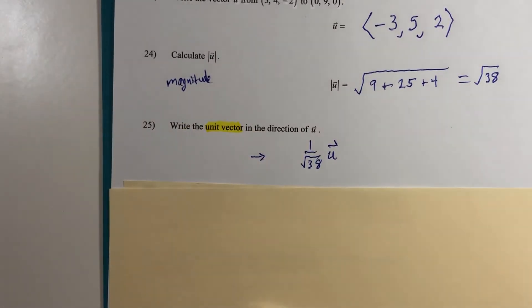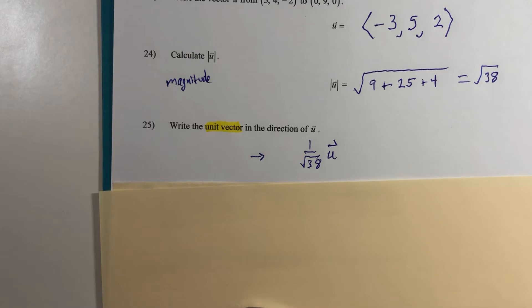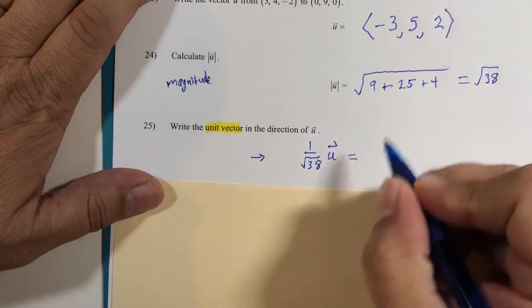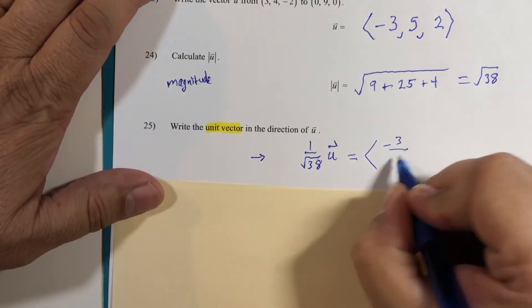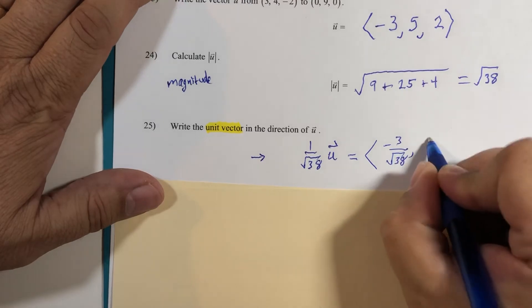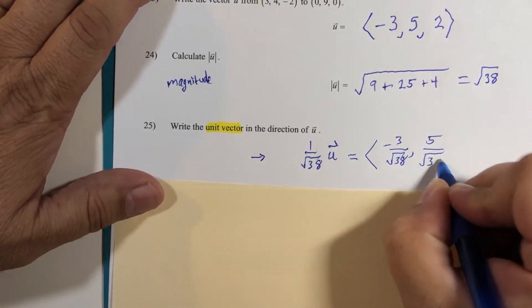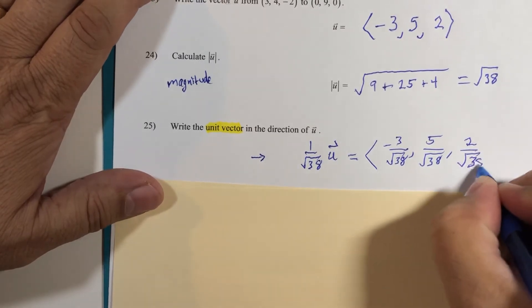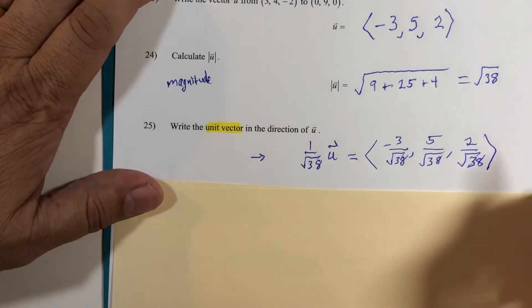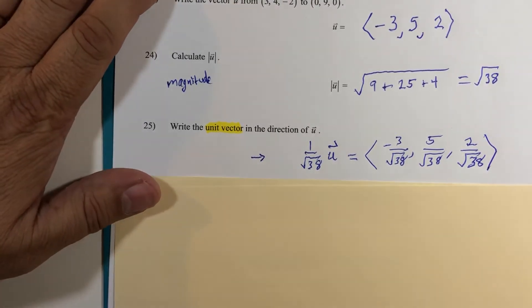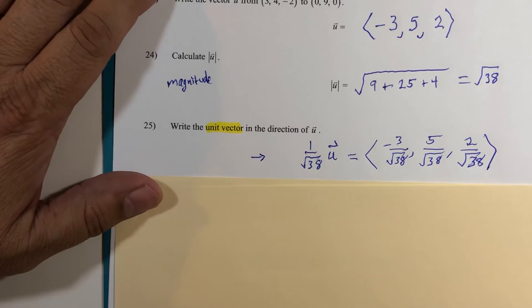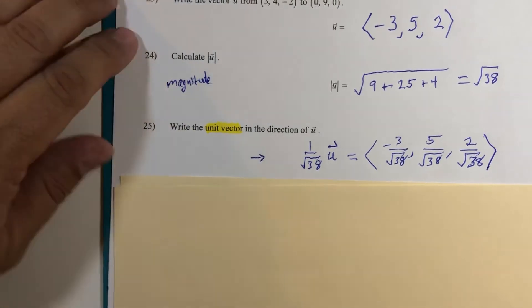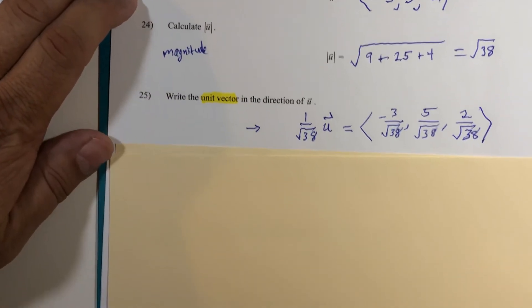the unit vector. So let's go ahead and distribute: that would be -3 over root 38, 5 over root 38, and 2 over root 38. To verify that the magnitude is 1 is not really a difficult calculation at all, and I completely encourage you to do it. If this were like a trig or pre-calculus class I'd probably take that extra time right now, but we do not have the extra time.